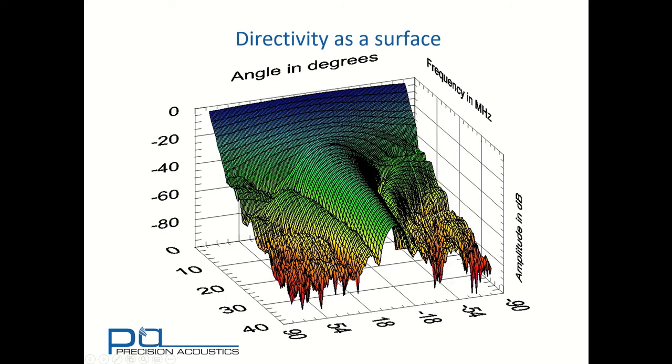We can also consider directivity as being a surface. This allows us to see the variation both as a function of angle of incidence and frequency. This is the directivity surface for the 0.2 millimetre needle hydrophone we were looking at previously. We can see at low frequencies we have a very broad response, but as frequency starts to increase we see a very dominant main lobe, and then secondary lobes, and between the primary and secondary lobes we have nulls. At very high frequencies we can start to see the emergence of tertiary lobes as well.